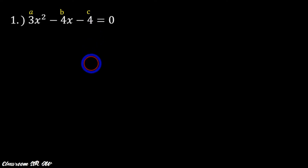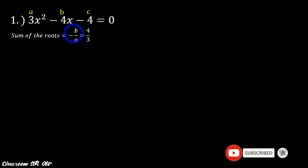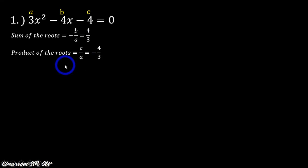The second step is to solve for the sum of the roots, which is negative B over A. Since our B is negative 4, negative times negative 4 gives positive 4, and A is 3, so the sum is 4 over 3. Next, the product of the roots is C over A, which is negative 4 over 3.